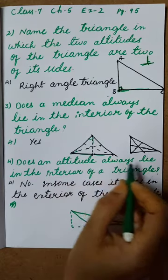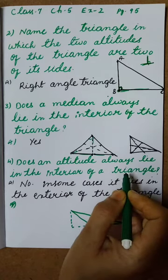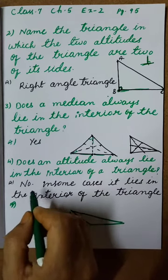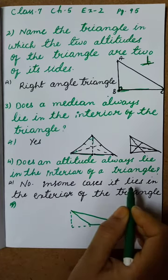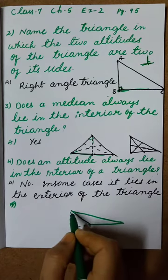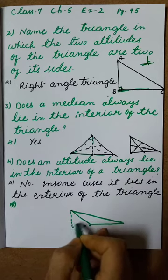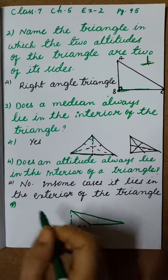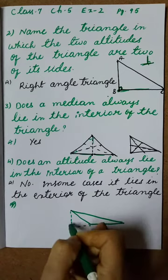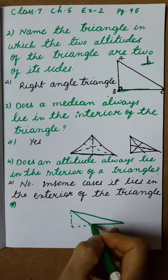Does an altitude always lie in the interior of a triangle? Sometimes it is interior only, but sometimes it will not be. The answer is no — in some cases it lies in the exterior of the triangle. See here, this is the altitude: from vertex to opposite side and is to be perpendicular, but this is outside only. That is why the answer is no — in some cases it lies in the exterior.